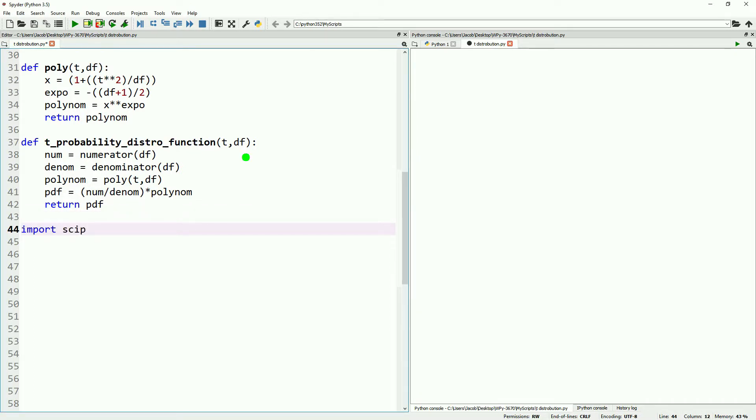Next, we'll import scipy.integrate. Remember, we have to take the integral of our probability distribution function to get the actual area underneath a given section of the curve. The probability under a given section of the curve is our actual probability. For more detail about how that works, reference our video on the normal and standard normal distribution.